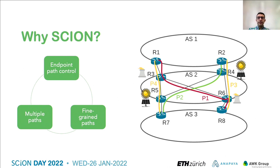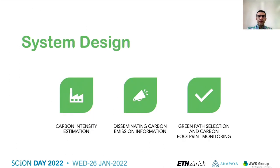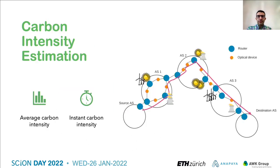As an example, in this figure, endpoints in ASs 1 and 3 can select path P2 to reach the other AS and reduce their carbon footprint through sending their traffic over a path powered by renewable energy resources. To achieve this goal in Scion, we need to design a system capable of estimating carbon intensity of interdomain paths, disseminating this information to all ASs and endpoints in the network, and selecting the greenest path and monitoring carbon footprint of communications. To estimate the average and instant carbon intensity of interdomain paths, we design a distributed system that computes their carbon intensities as the sum of carbon intensities of all intra-domain path segments they consist of.